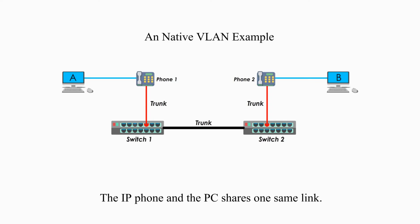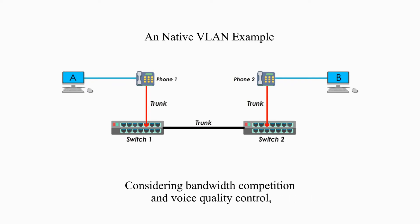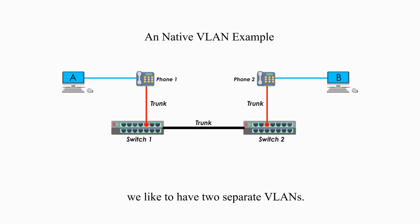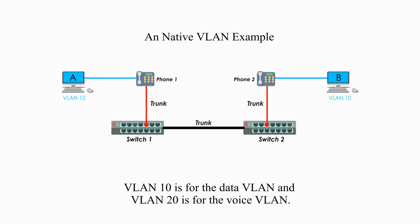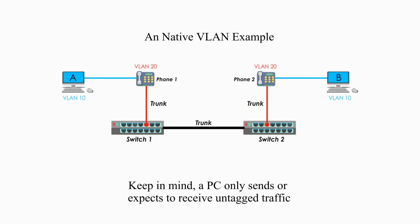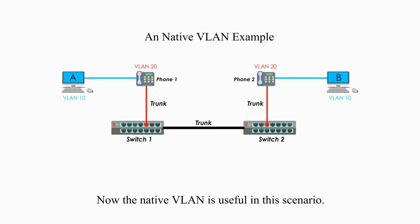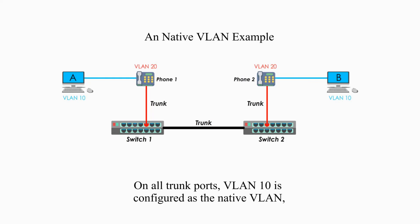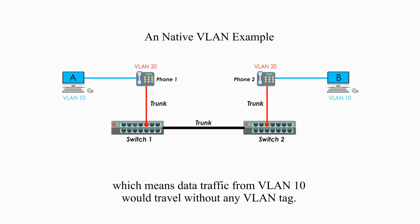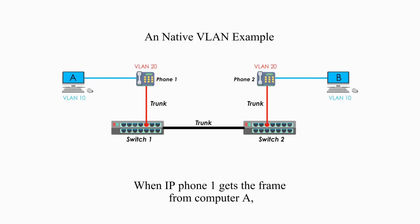The IP phone and PC share one same link. Considering bandwidth competition and voice quality control, we like to have two separate VLANs: VLAN 10 for the data VLAN and VLAN 20 for the voice VLAN. Keep in mind, a PC only sends or expects to receive untagged traffic, while the IP phone supports 802.1Q and sends and expects to receive tagged traffic. The native VLAN is useful in this scenario. Suppose on all trunk ports, VLAN 10 is configured as the native VLAN, meaning data traffic from VLAN 10 would travel without any VLAN tag. When IP phone 1 gets the frame from computer A, it just forwards it to switch 1.